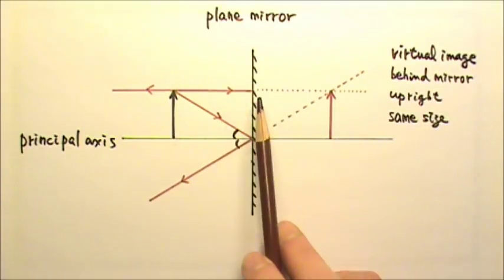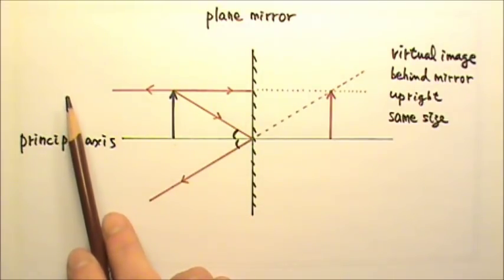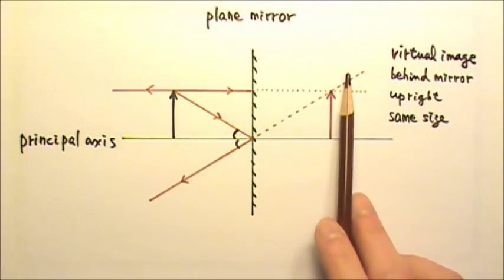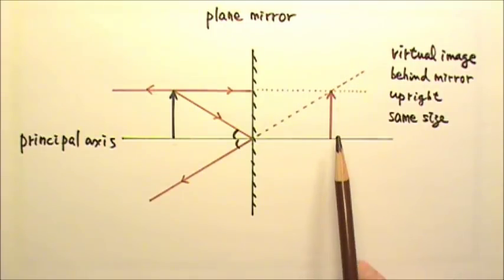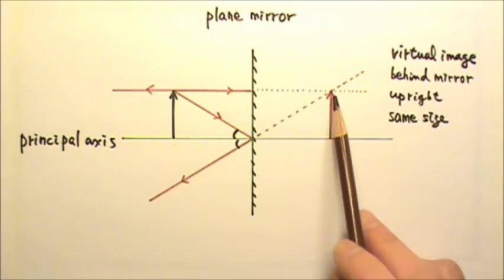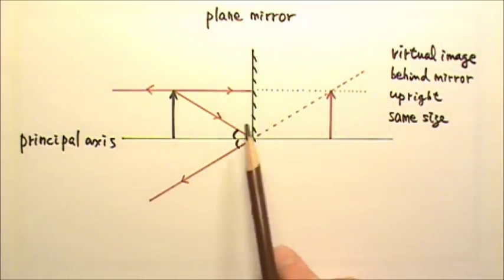Because a mirror reflects light, no light rays from the object can reach behind the mirror. And as you can see, this virtual image is upright and the same size as the object.